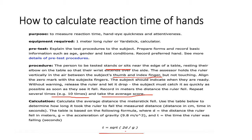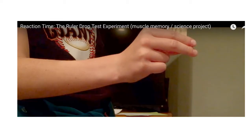This is the formula: calculate the average distance d from your 10 values. g is the acceleration due to gravity, fixed at 9.8 meters per second squared. You take the square root of (2d/g) and this gives you your reaction time. It is a very simple calculation.